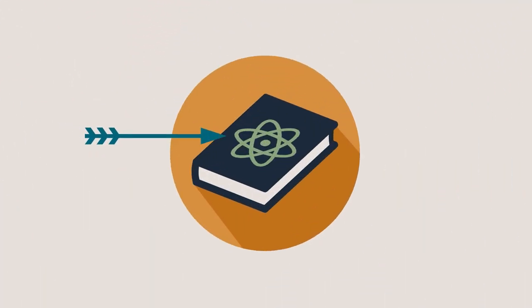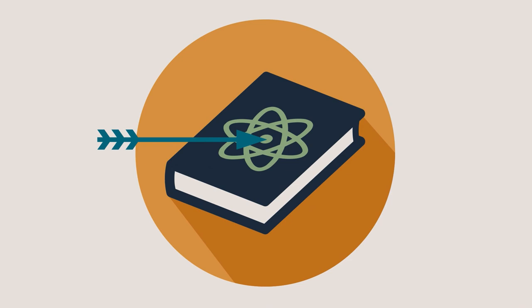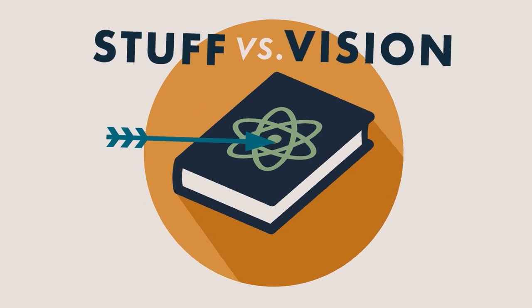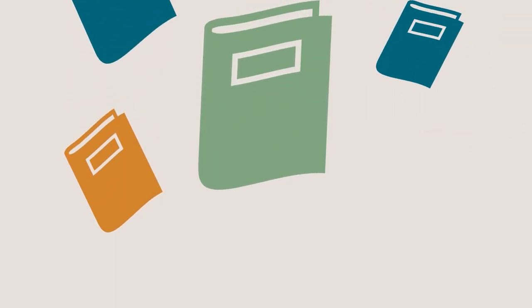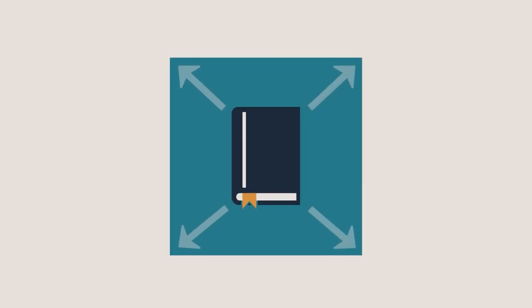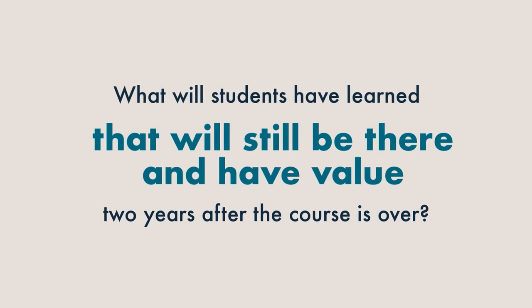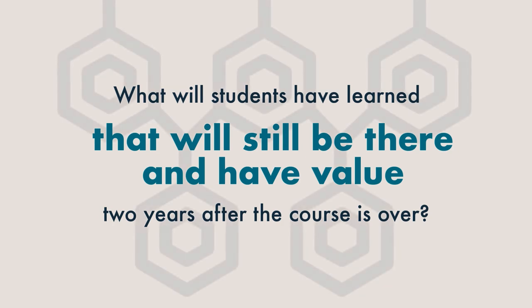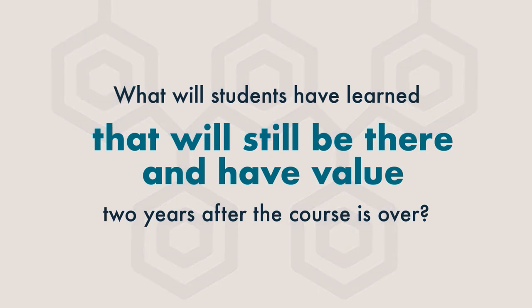Starting with the textbook is a very common practice when designing a course, but the tension is that you're starting from the stuff as opposed to the vision. What if starting with content actually limits what you really want your students to learn? Backward design asks the question: what is it I hope that students will have learned that will still be there and have value two years after the course is over — and gives you a framework to build towards that vision, creating a learning experience that has a legacy long after the end of the semester.